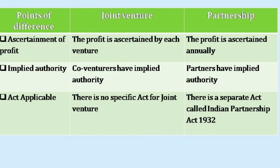The next difference is with regard to implied authority. In a joint venture, co-venturers have implied authority. Whereas in case of partnership, partners have implied authority.